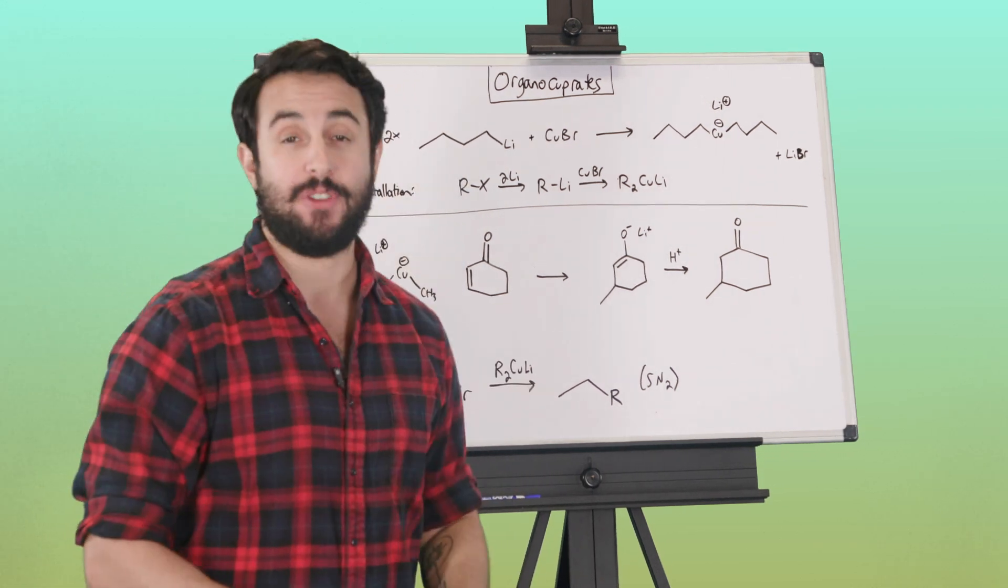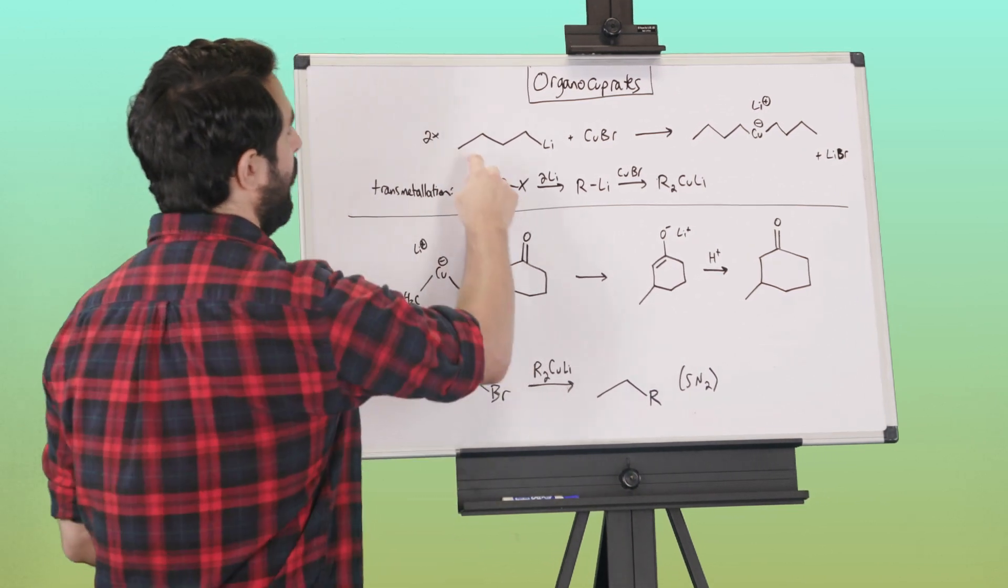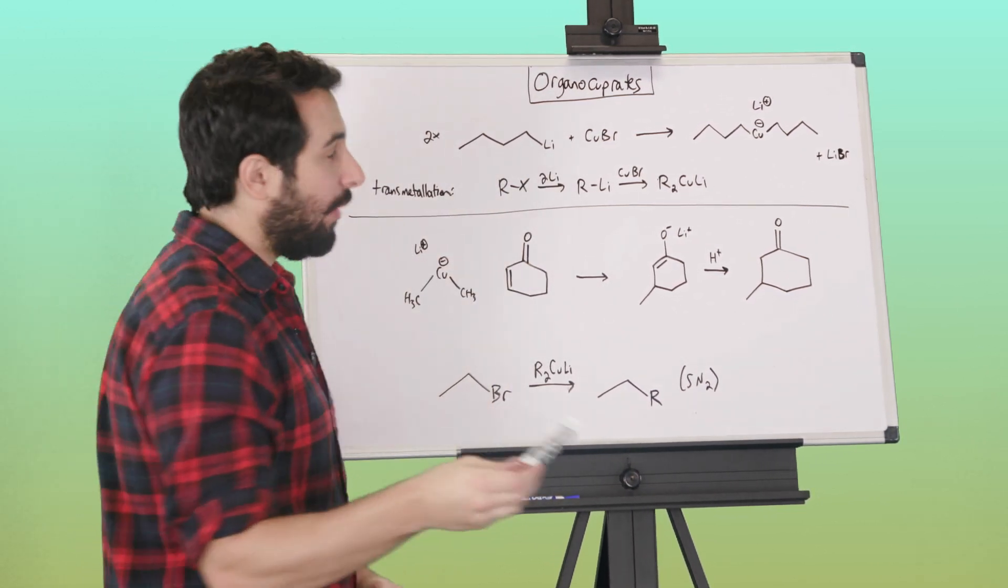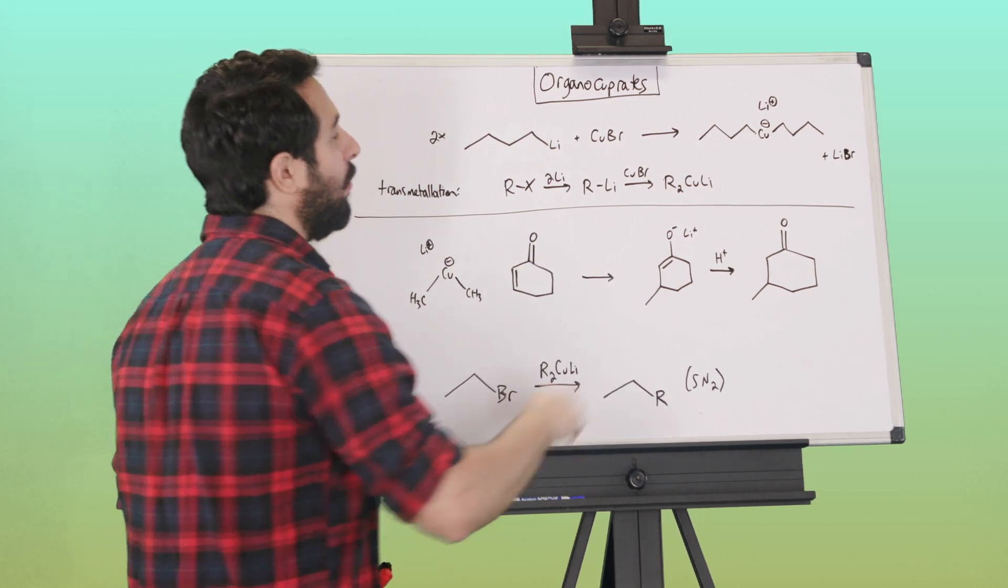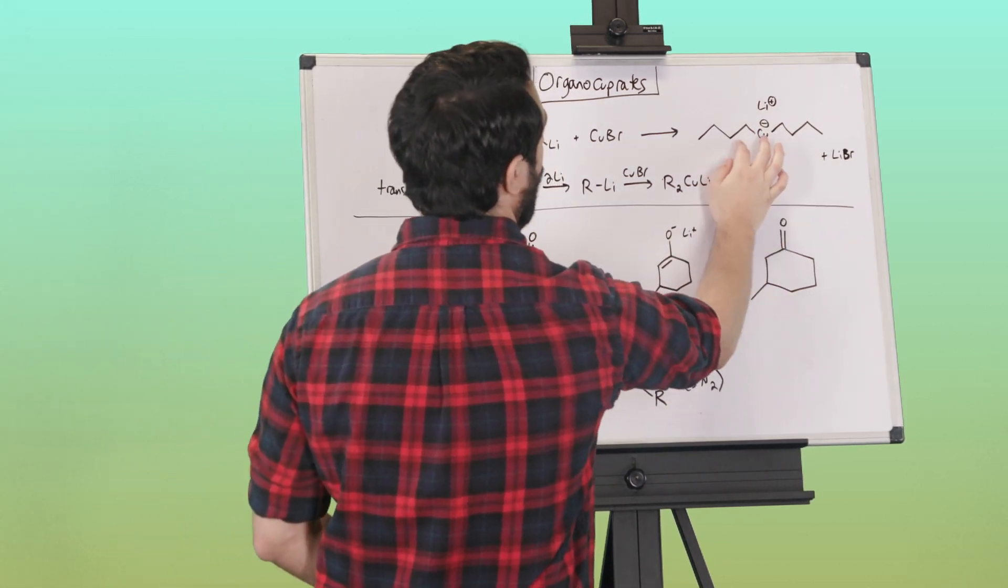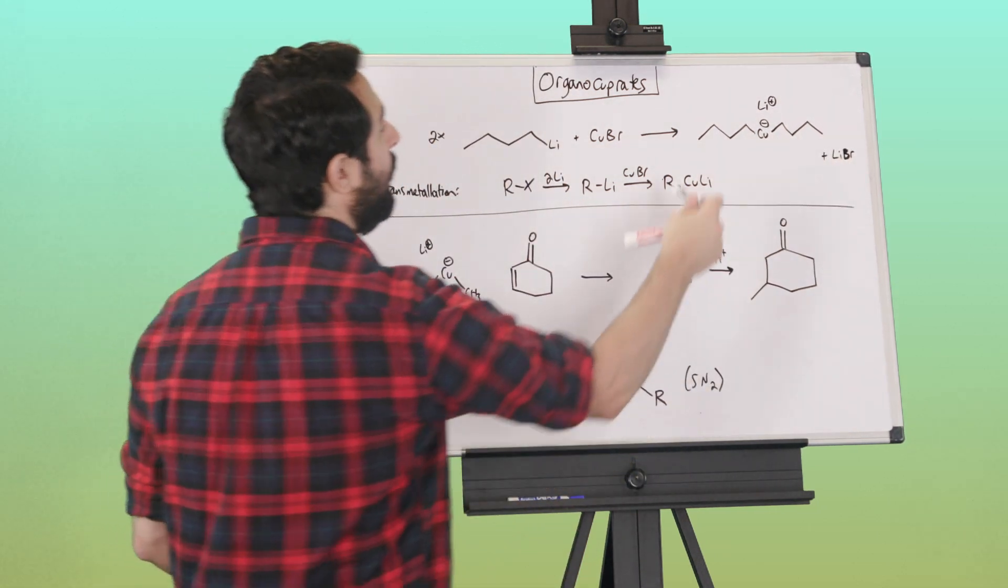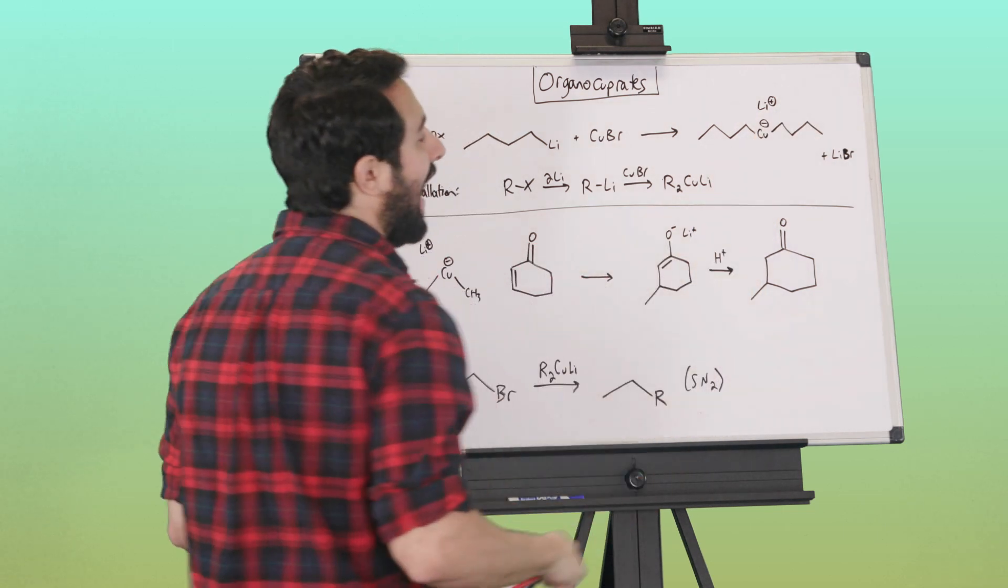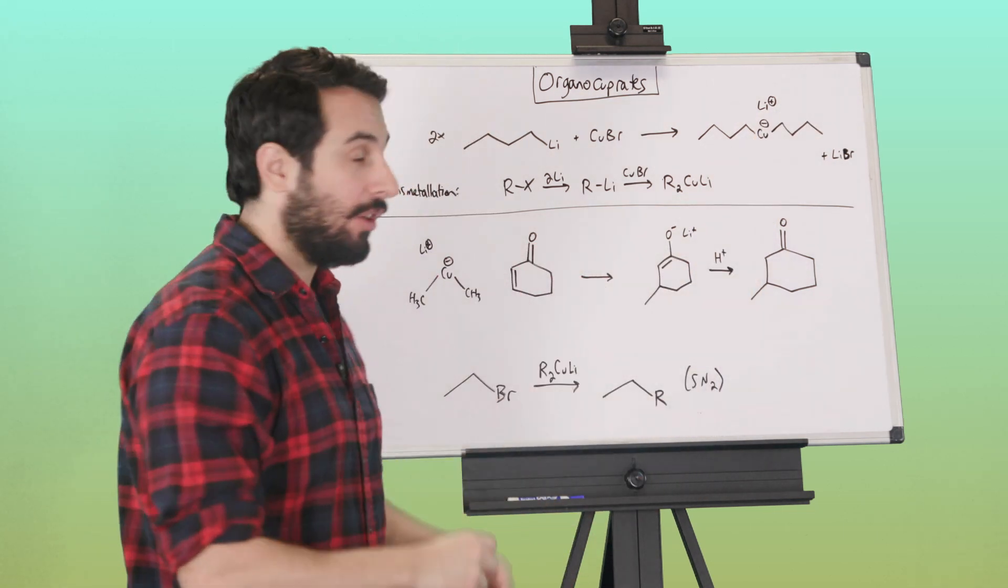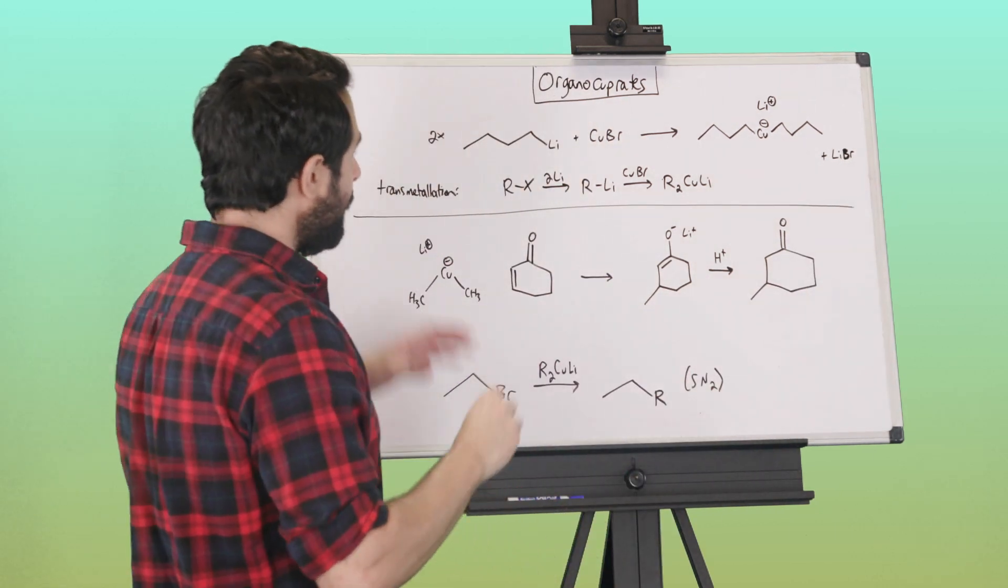In fact, they are prepared from organolithium reagents. Say we have two equivalents of this n-butyl lithium and we're going to react with copper bromide. What we're going to end up with here is this copper anion with both of the alkyl groups attached to it, so we've got those two butyl groups right here, and then that lithium counterion is going to hang out near the copper anion, and we also get LiBr.